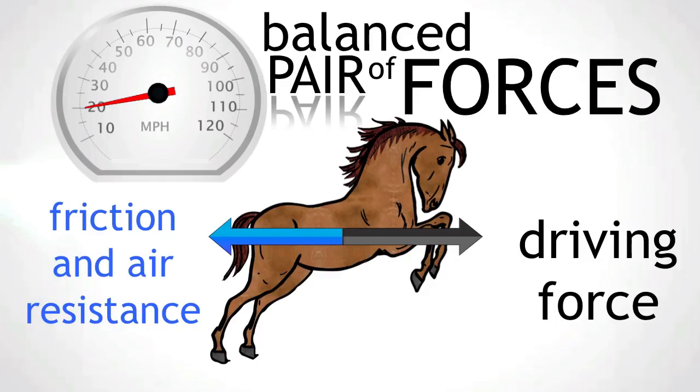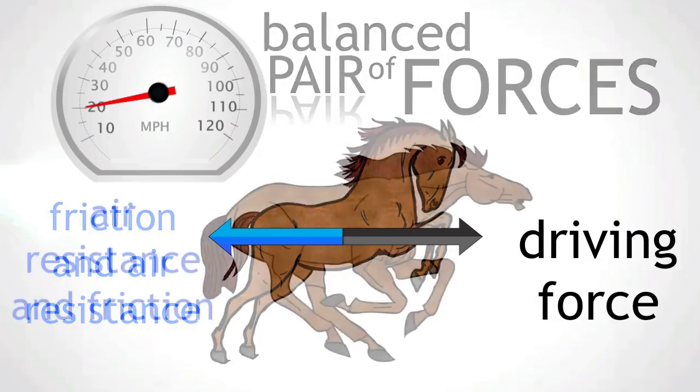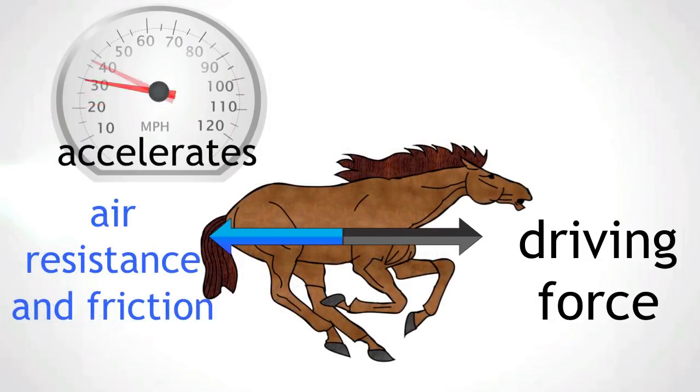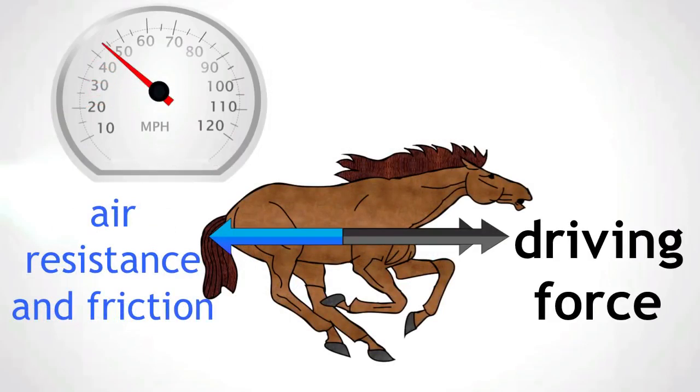If the horse accelerates, the driving force must be greater than friction and air resistance. The driving force is now no longer balanced by friction and air resistance. These forces are now unbalanced.